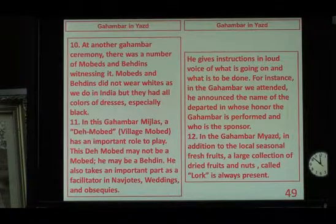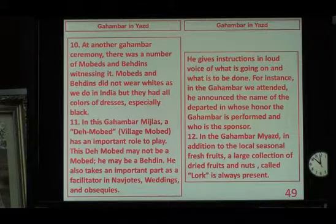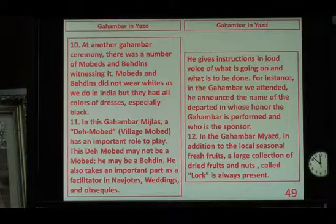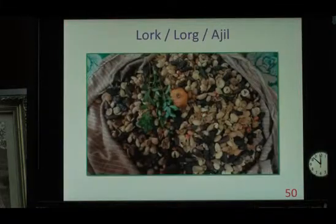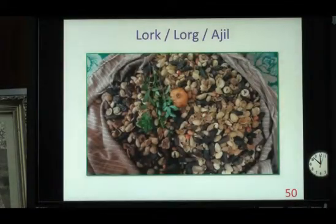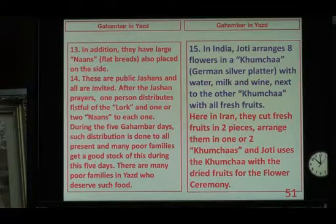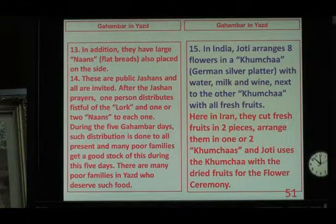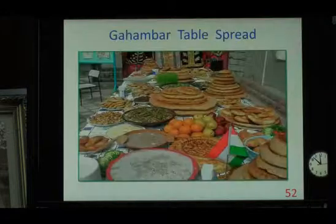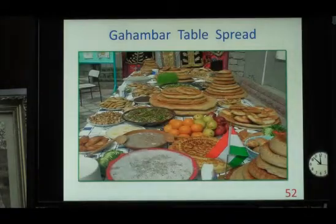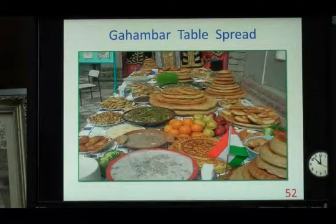In the Ghambar Meers, the local seasonal fresh fruits and a large collection of dried fruits and nuts called Lork is always present, as you see in slide 50. And then huge naans were also placed there. We talked about that before.